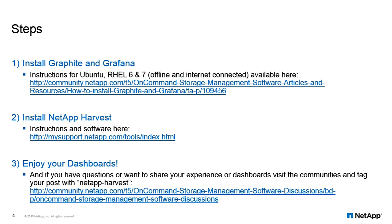We have instructions for Ubuntu using the native package repositories, Red Hat 6, and Red Hat 7. For Red Hat 6 and 7, we have instructions both for when you have an internet connection and can pull directly from repositories, and for an offline method using a jump host to copy files from an internet-connected host into the Red Hat system. You can get up and running with Graphite and Grafana in about a half hour. After that, you download NetApp Harvest from the Tool Chest — there's a detailed set of instructions, and configuring it also takes about 30 minutes. After that, what's left to do? Enjoy the dashboards.